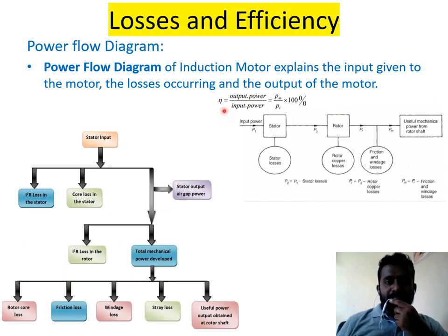Efficiency is generally given by output power divided by input power. PM is the output power and PI is the input power. If taking percentage, multiply by 100.